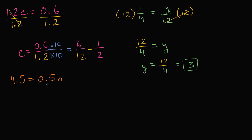4.5 is equal to 0.5n. So like always, I have my n already on the right hand side, but it's being multiplied by 0.5. It would be great if it was just an n. So what can I do? Well I can divide both sides by 0.5. Once again, if I do it to the right hand side, I have to do it to the left hand side. And why am I dividing by 0.5? So I'm just left with an n on the right hand side.